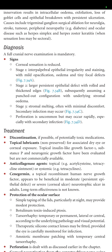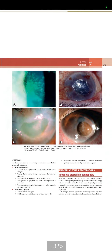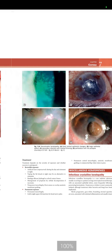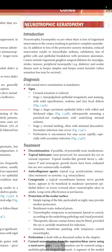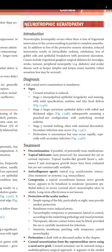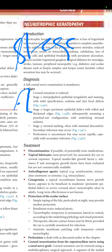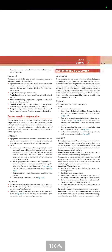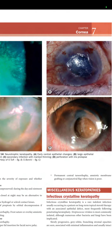Figure 7.34a shows early central epithelial changes, also visible stained under cobalt blue filter light. Stage two is a large persistent epithelial defect with rolled and thickened edges, subsequently assuming a punched-out appearance with underlying stromal edema. Figure 7.34b shows the rolled edges and the epithelial defect clearly.